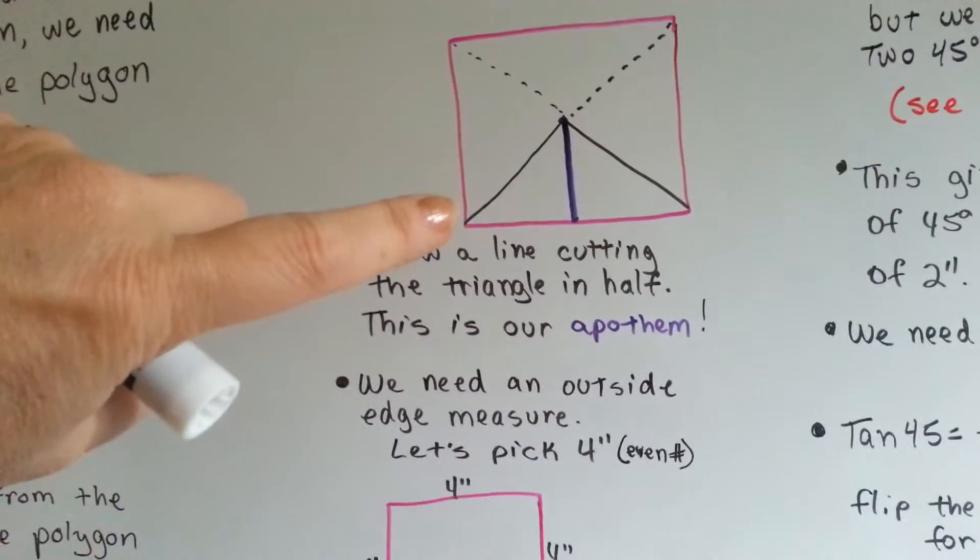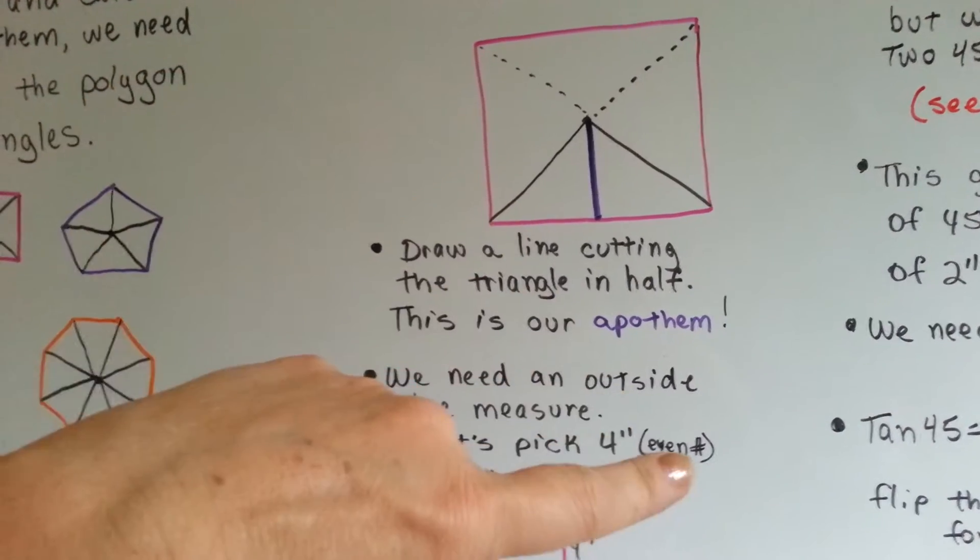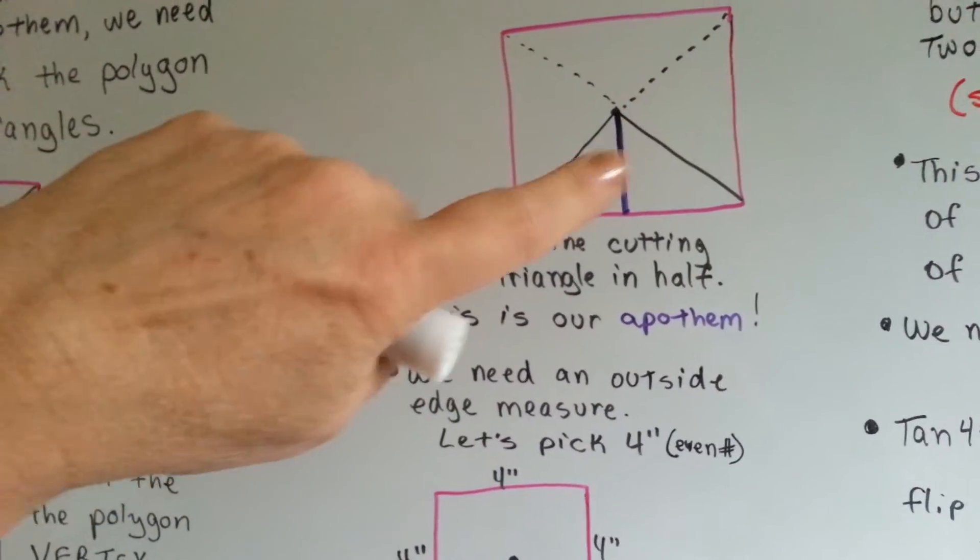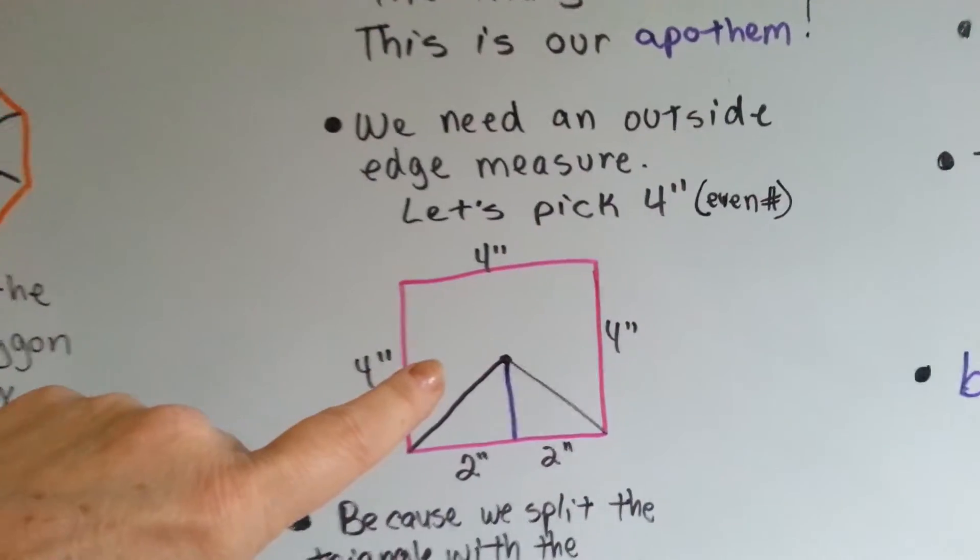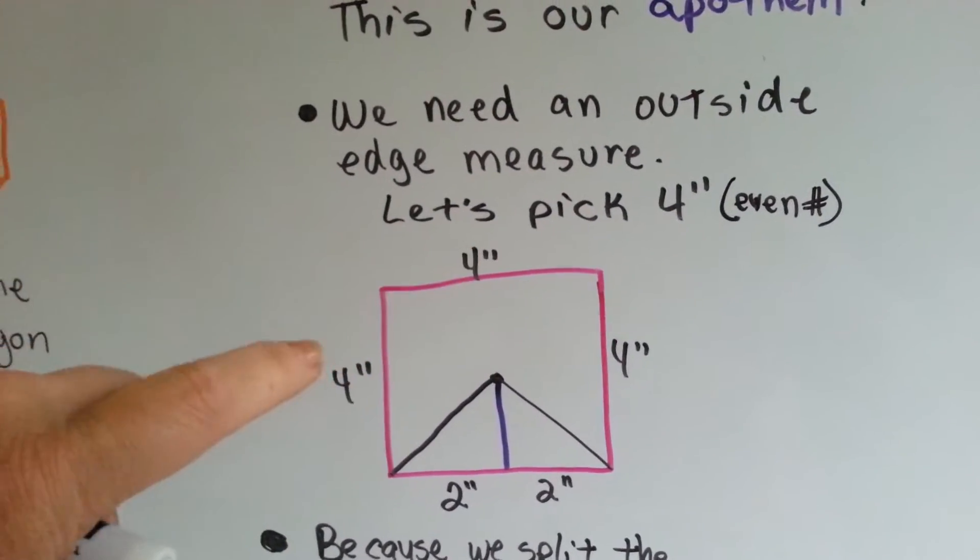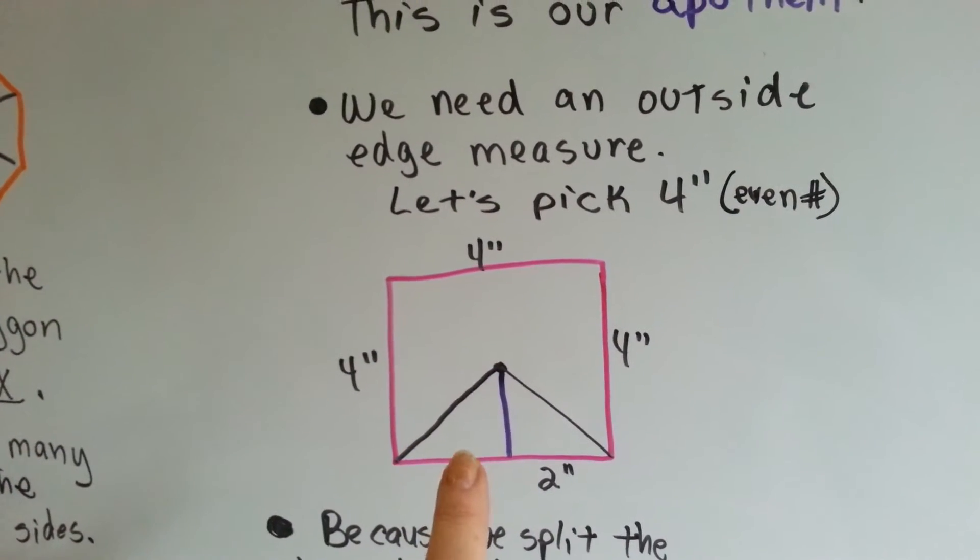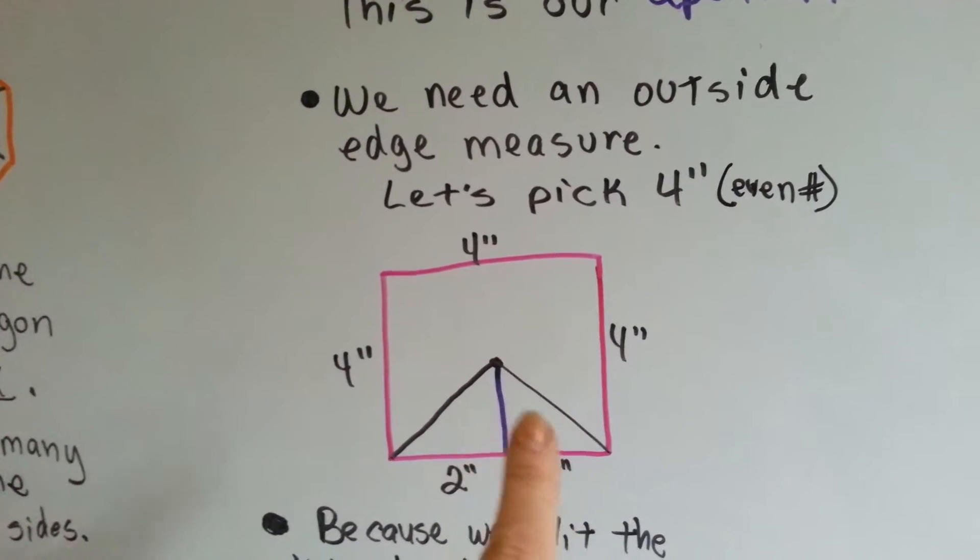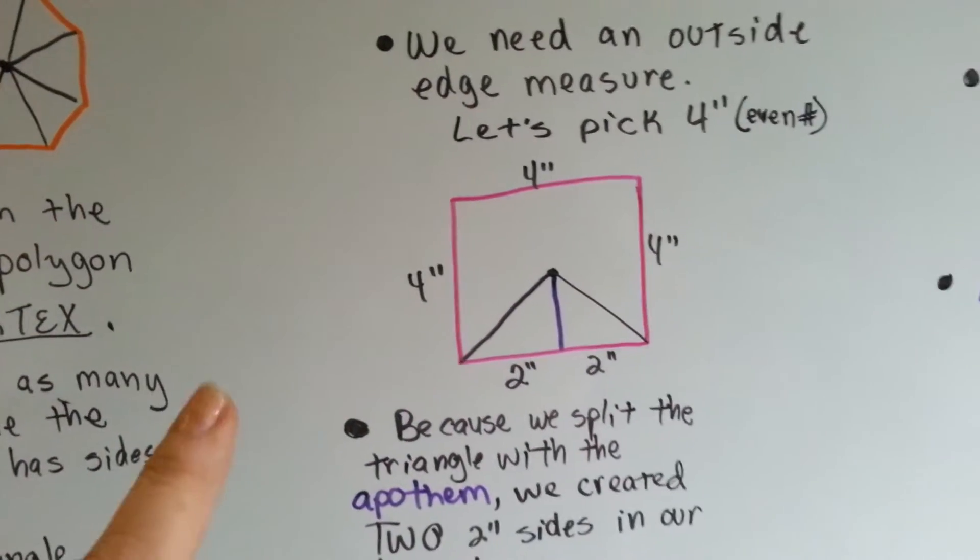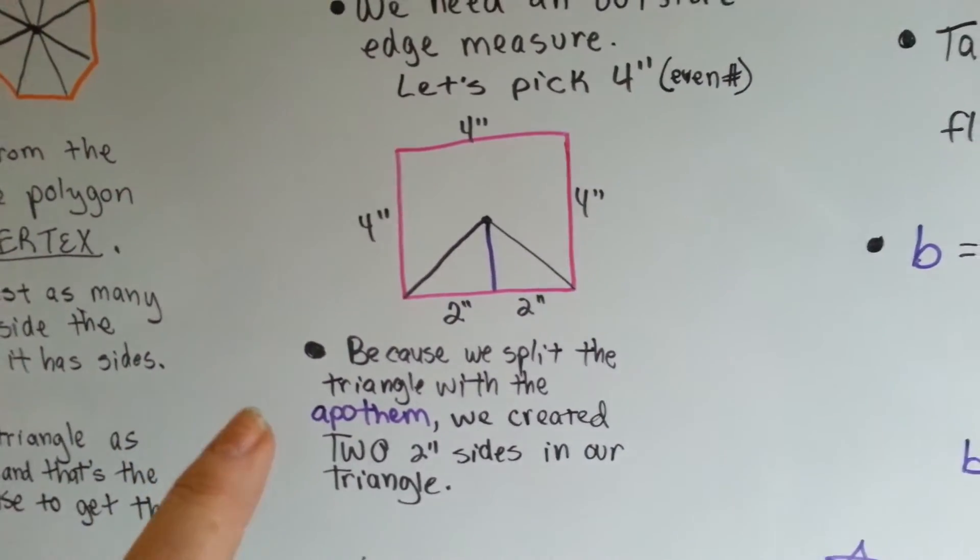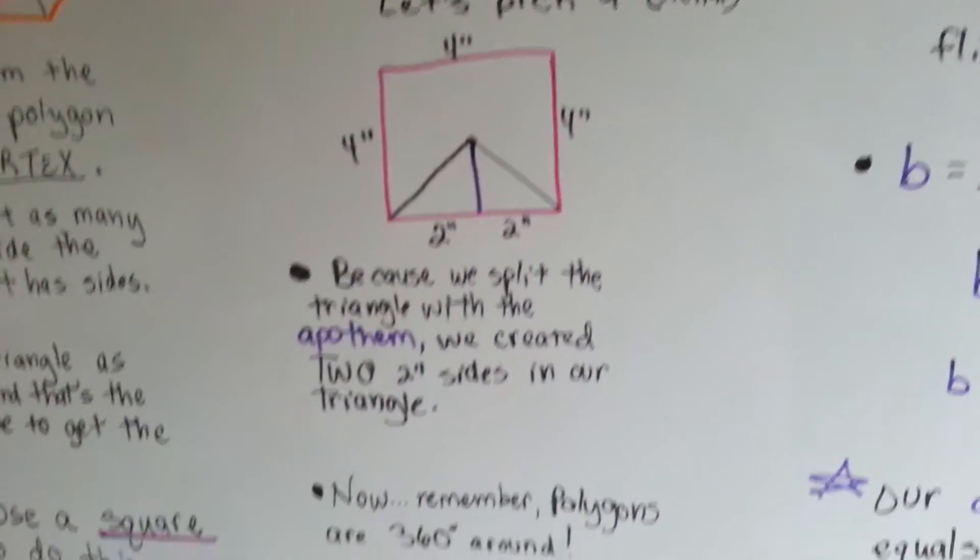So, we need an outside edge measure. I want to pick four because it's an even number and it's easy to divide into two. So now we've got this. Each of these outside lines of the square is four inches, but this one's two inches and this one's two inches because we broke this triangle in half with that apothem. Now, because we split the triangle with the apothem, we created these two inch triangle sides.